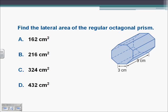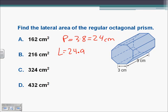Here we're asked to find the lateral area of a regular octagonal prism. We're told the side length is 3, and since we have eight sides, the perimeter equals 3 times 8, which is 24 centimeters. The lateral area equals the perimeter times the height: 24 times 9 gives us a lateral area of 216 square centimeters.